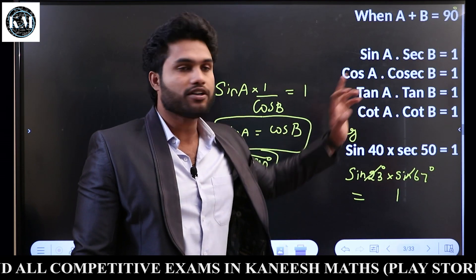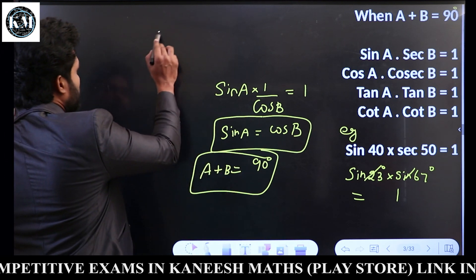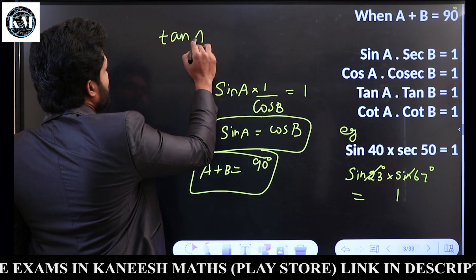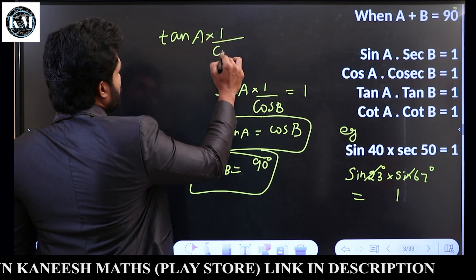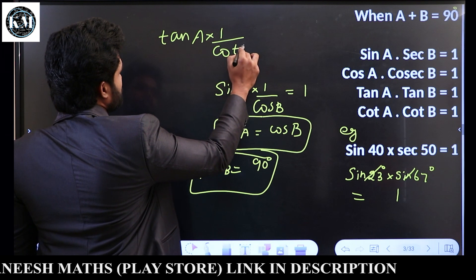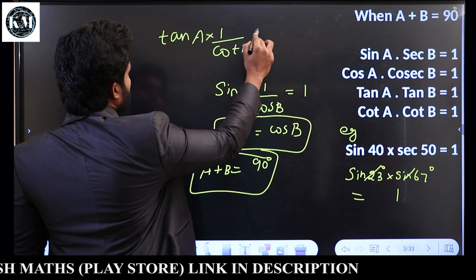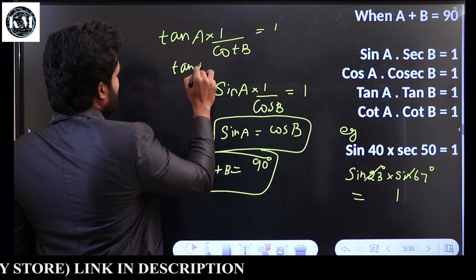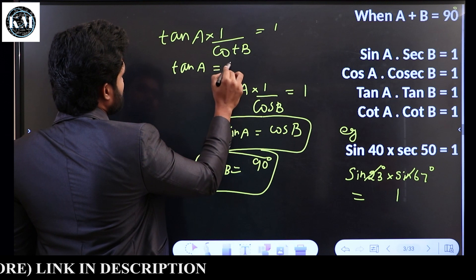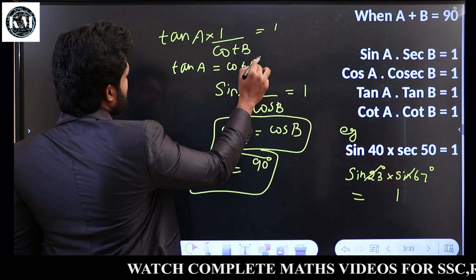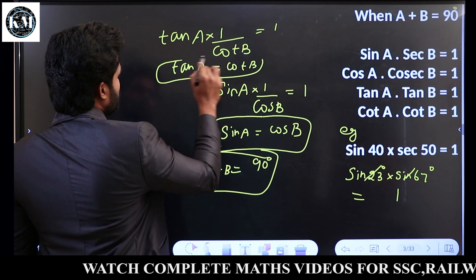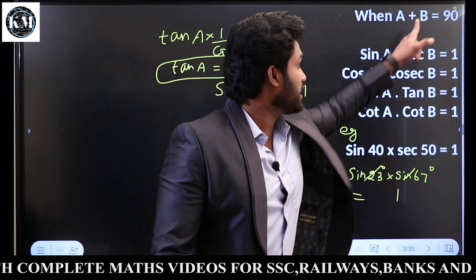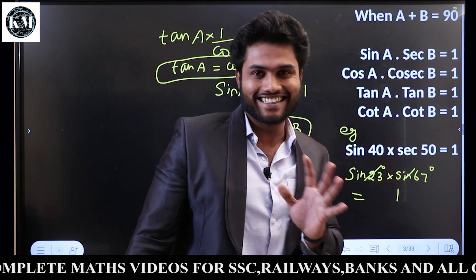If we say Tan A × Tan B: Tan B is equal to Cos B over Sin B. Tan A is equal to Sin A over Cos A. When A plus B equals 90 degrees, the product equals 1.